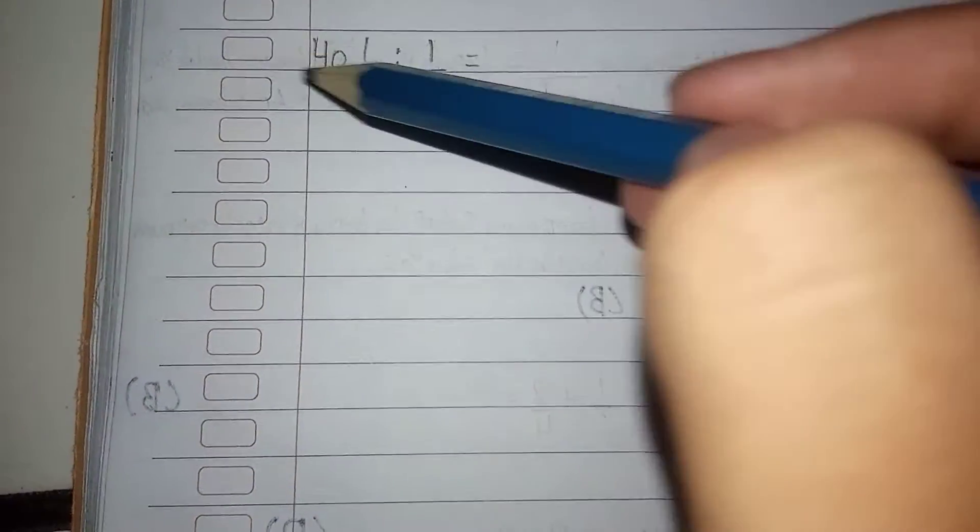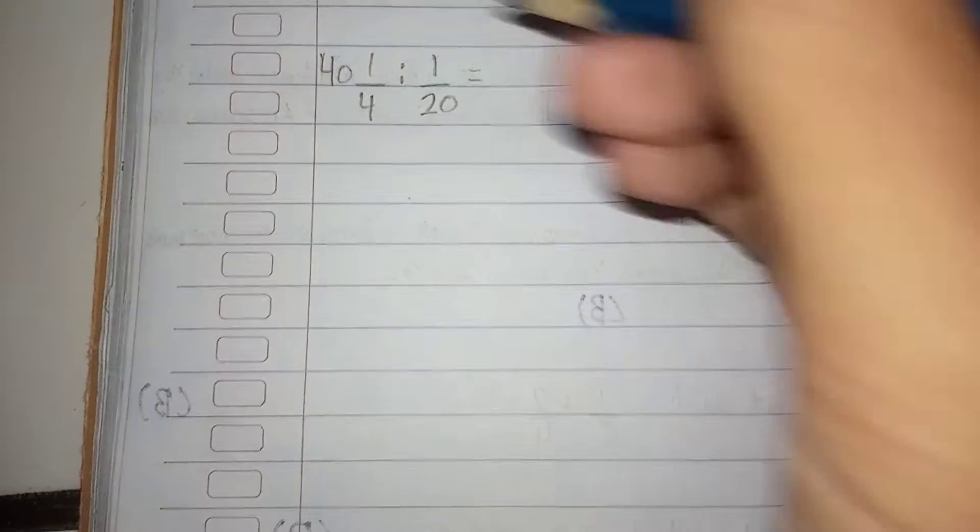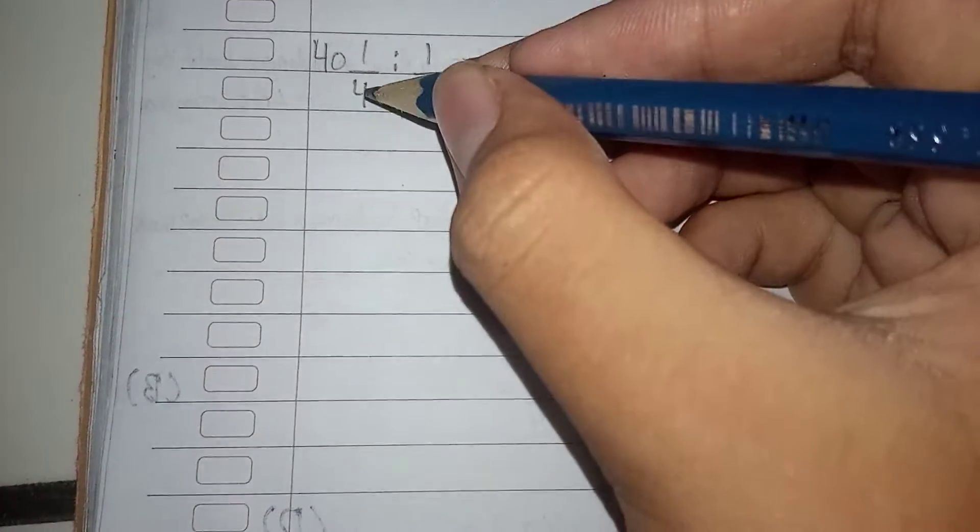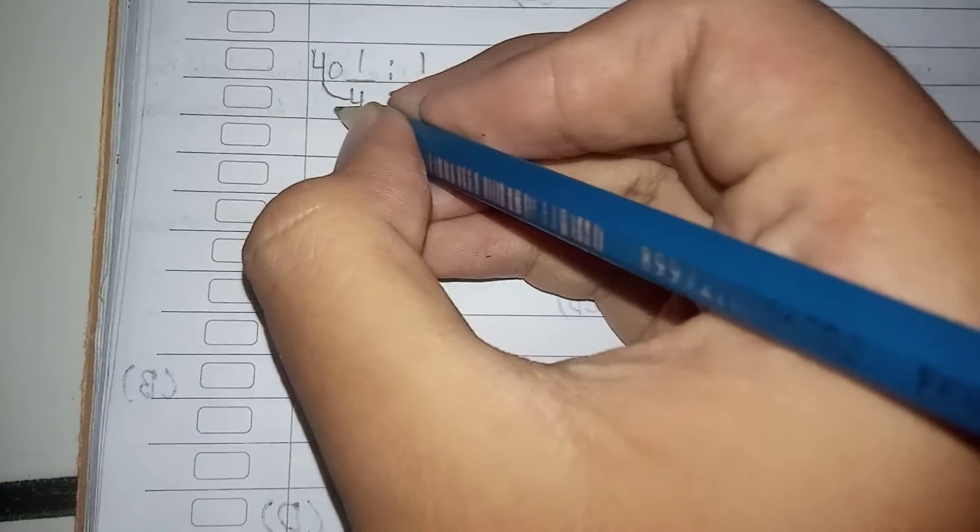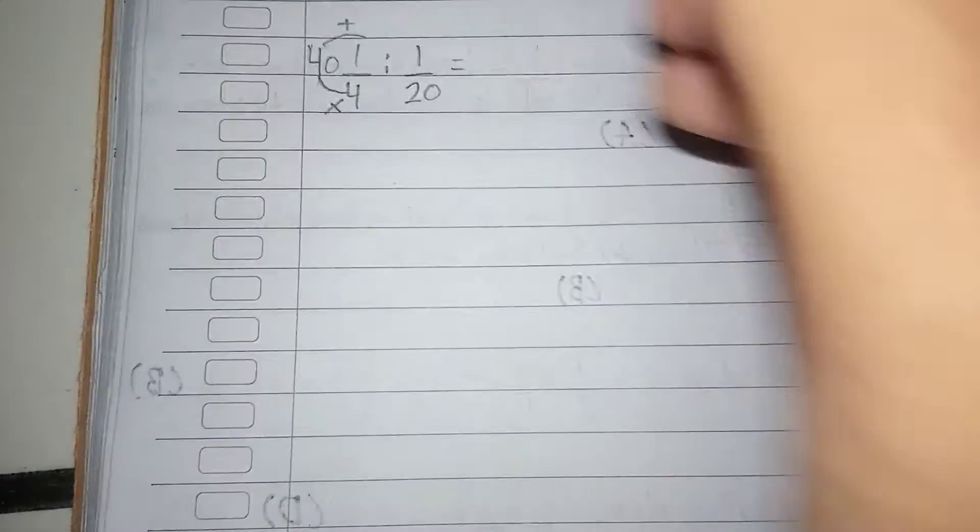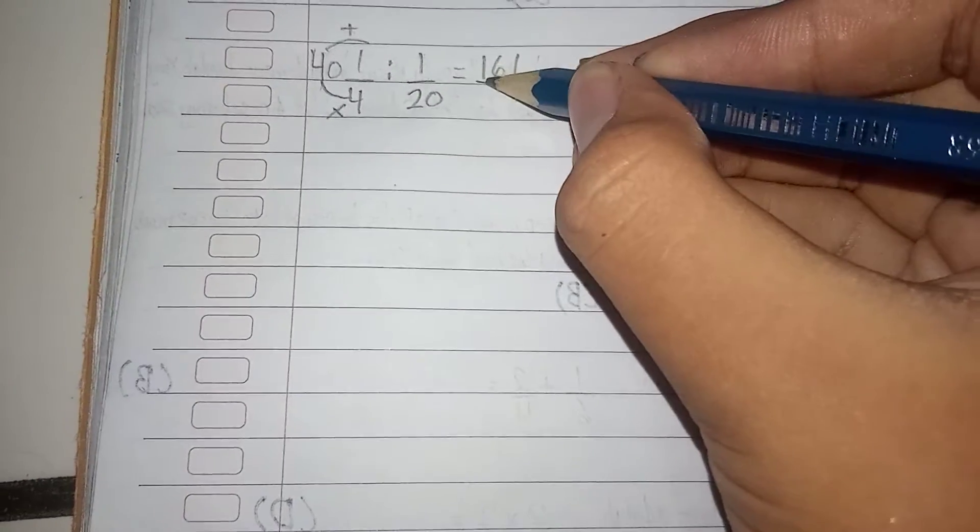Okay, now let's solve this problem. For the 1 over 4 divided by 1 over 20, you can do this. Let me translate this. So this is times, and then add. In that case, it's 161 over...